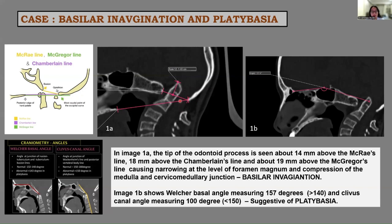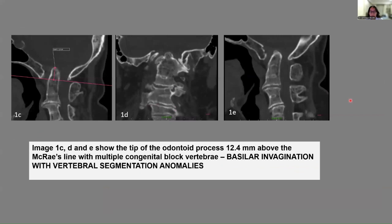This is causing narrowing at the level of the foramen magnum and compression of the medulla and CVJ, suggestive of basilar invagination. In image 1B, the Welcher basal angle was 157 degrees and the clivus canal angle was 100 degrees, suggestive of platybasia. Another case shows a 35-year-old woman with neck pain and congenital short neck, where image 1C shows the odontoid process 12.4 mm above McRae's line with multiple congenital block vertebrae, suggestive of basilar invagination with vertebral segmentation anomalies commonly seen in Klippel-Feil syndrome.